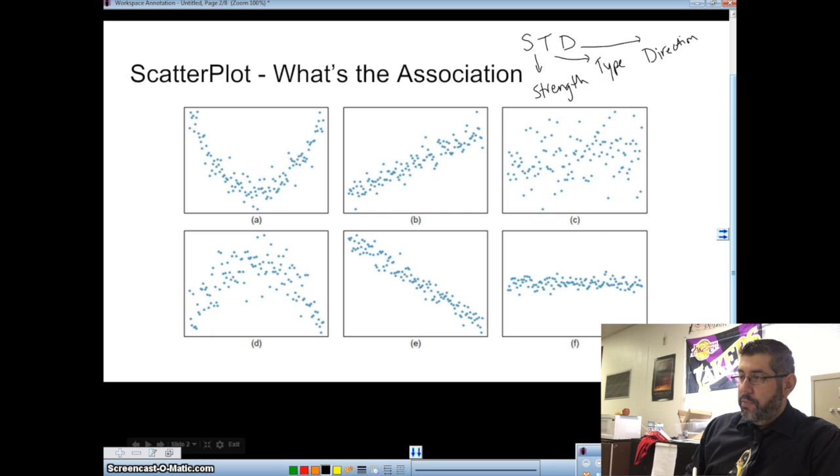Let's talk about these associations. Type is whether it's going to be linear or curved. The direction is either going to be positive or negative. So positive would be a slope that goes up here. This is a positive slope if I kind of drew a line right through all these data.